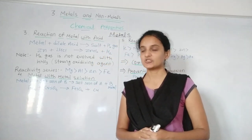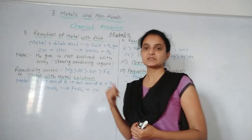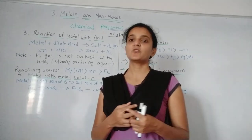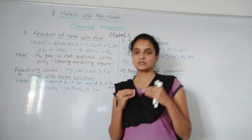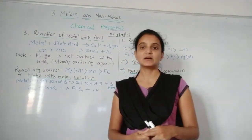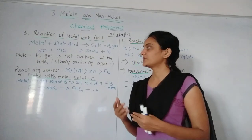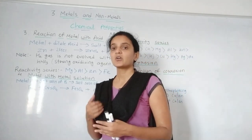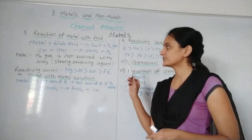Metal with dilute acid gives salt plus hydrogen gas. But the reactivity of all metals is not the same, so the same thing applies here — the reactivity of metals with acids also varies. Some metals react with dilute acid while some metals react only with concentrated acid.